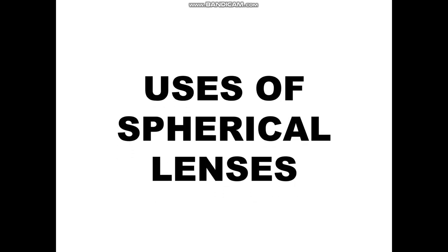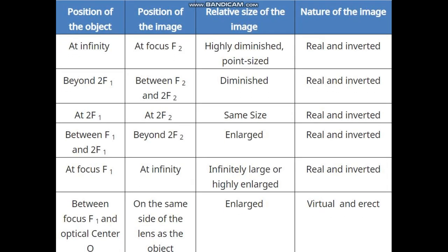Let's see what are the uses of spherical lenses. We have seen the image formation of an object by a convex lens, and we know that when we keep the object at various positions, the image obtained is of various sizes and different nature. Various sizes means it may be enlarged, same size, or diminished. In nature, it may be real — obtainable on a screen — or it may be virtual. Accordingly, the lens is put to different uses.